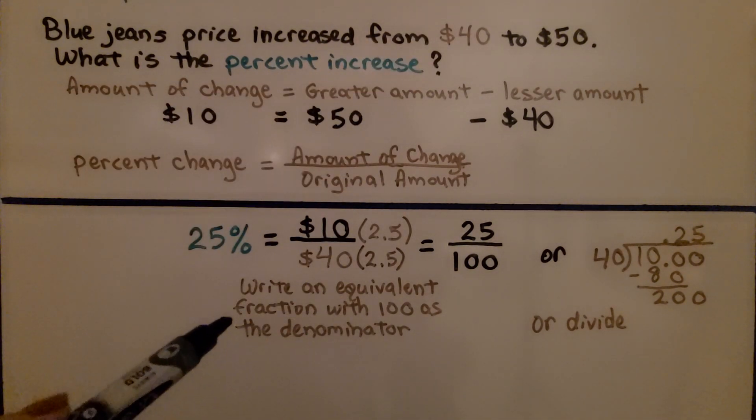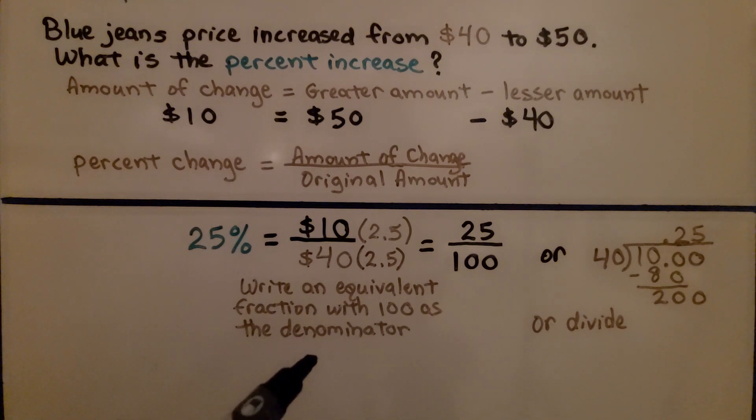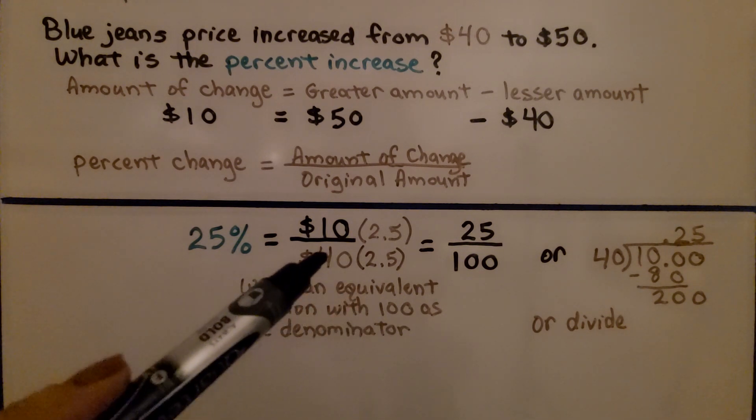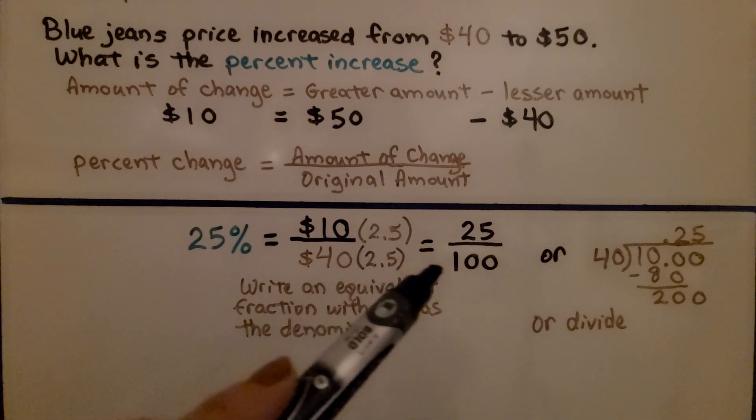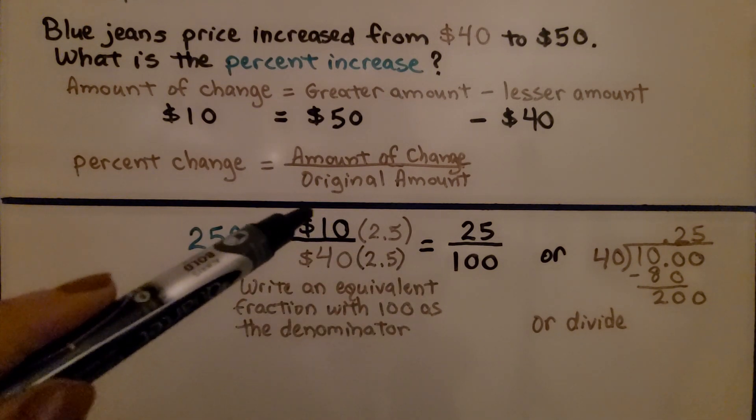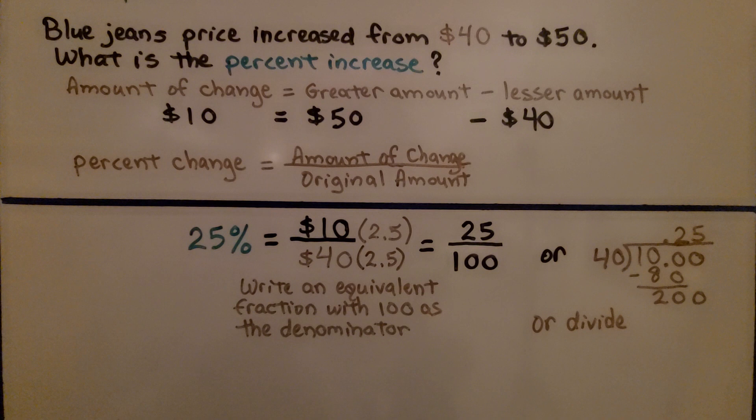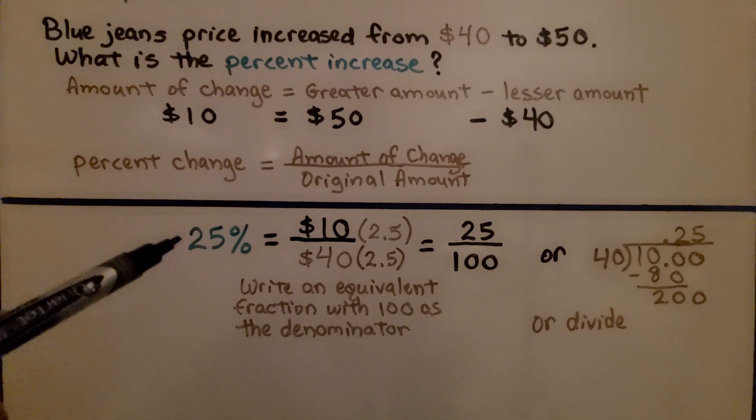We can write an equivalent fraction with 100 as a denominator. We think, well, 40 needs to be multiplied by 2.5 to be 100. So we multiply 10 by 2.5 and we get 25. That's 25 hundredths. That would be 25%.